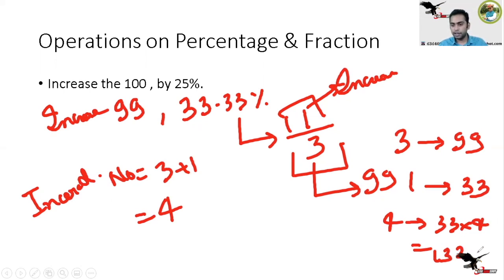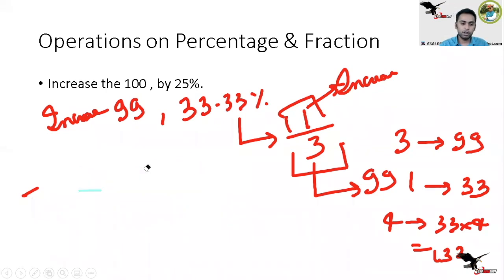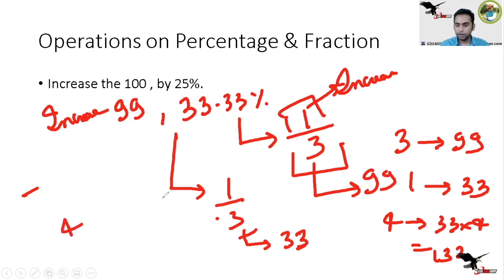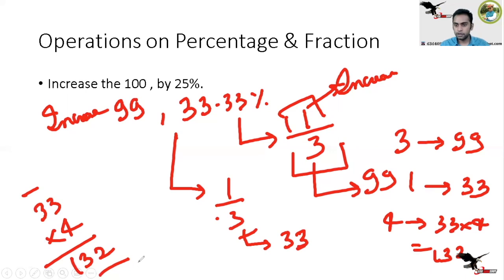So the increased value is 132. This is the easiest way and takes less time. After quick practice and knowledge of percentage-to-fraction conversion, the only thing you need to do mentally is recognize that 3 relates to 99, so 1 unit equals 33. Then the only written calculation is 33 × 4 = 132. This is the amount of time you save by using this trick method.